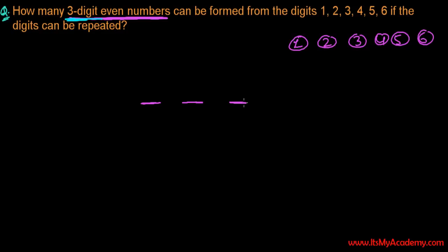For an even number, the last digit should be divisible by 2 - it should be zero or some even number. Here the even numbers are 2, 4, or 6. So the last digit should be any of these three. The last position can be filled in three different ways.